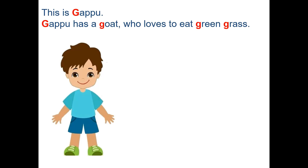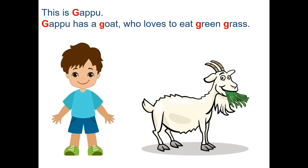Gappu has a goat who loves to eat green grass. G, G — green grass.